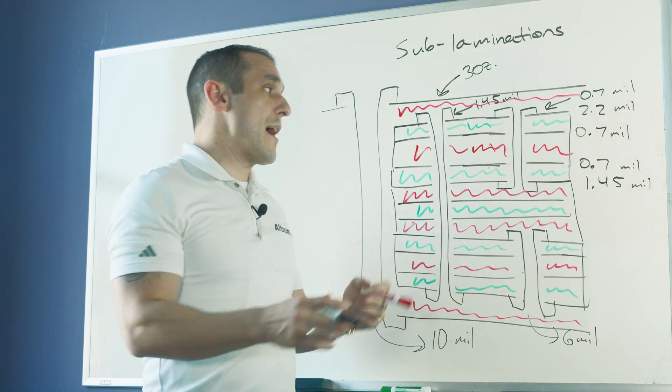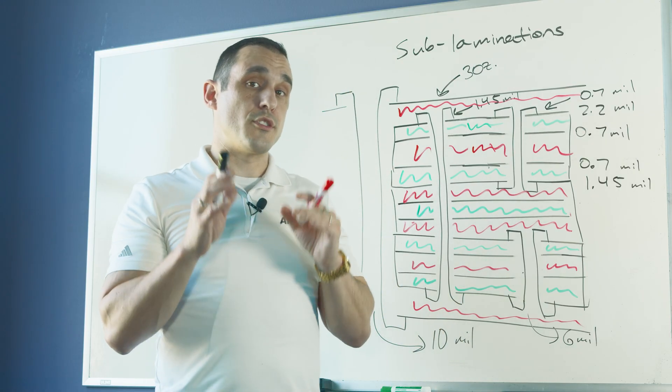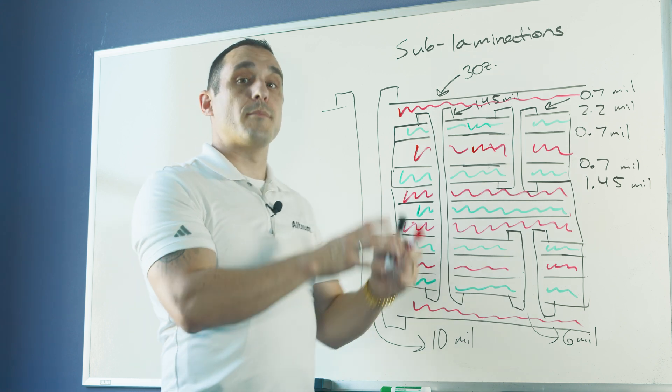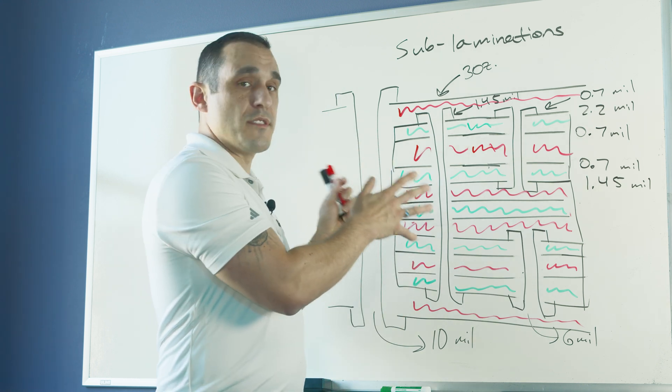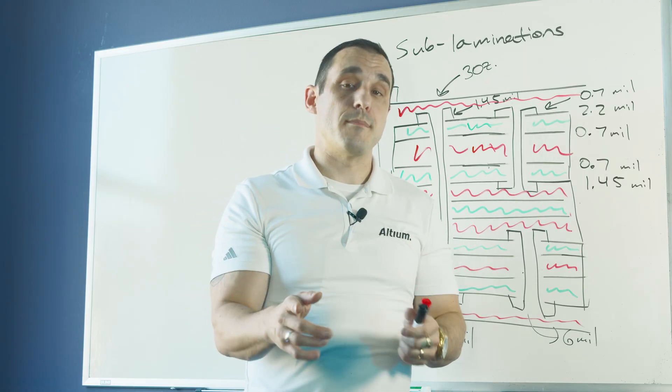If you're interested in learning more about sub-lamination builds, check the links in the description — including a video on using these via types for overlapping BGAs and design rules for these via structures. We also have resources on sequentially laminated PCBs with blind and buried micro vias. Thanks for watching — hit the like button, hit subscribe, leave your comments and questions, and don't forget to call your fabricator. We'll see you next time.